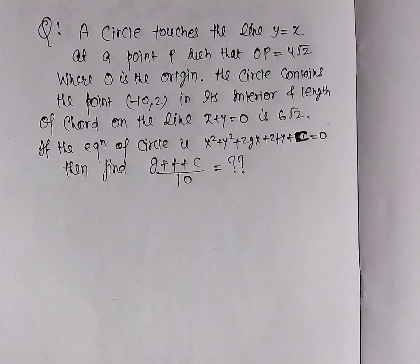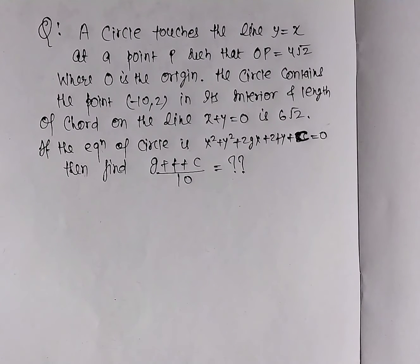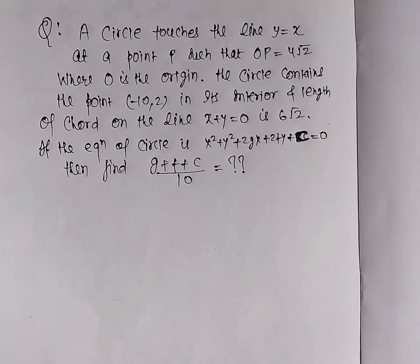A circle touches the line y = x at a point P where OP = 4√2, and O is the origin. The circle contains the point (-10, 2) as its interior point, and the length of the chord on the line x + y = 0 is 6√2. We have to find the equation of the circle.